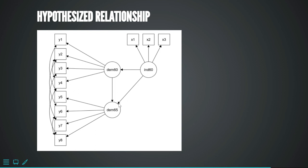This is the diagram of the hypothesized relationships. As I already said, one needs to get the hypothesized relationships right so that you are going to have a good model fit. You can also get this diagram plotted using another package, either lavaanPlot or semPath, which I will be explaining later on.